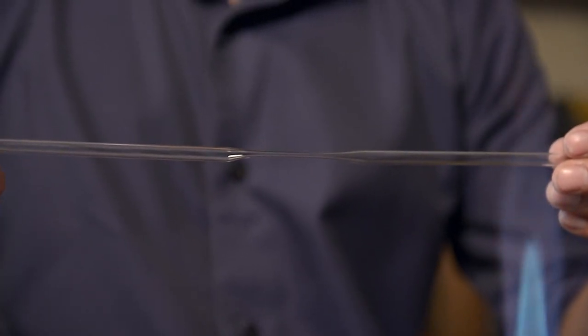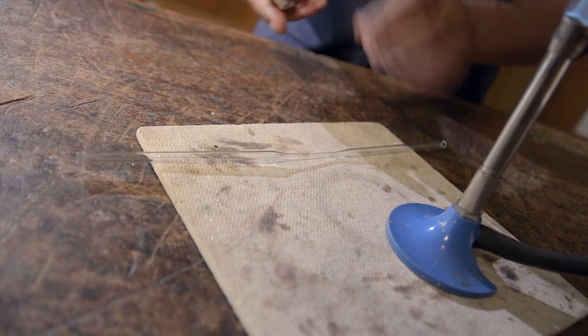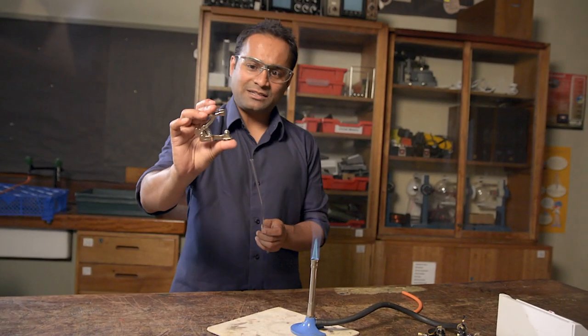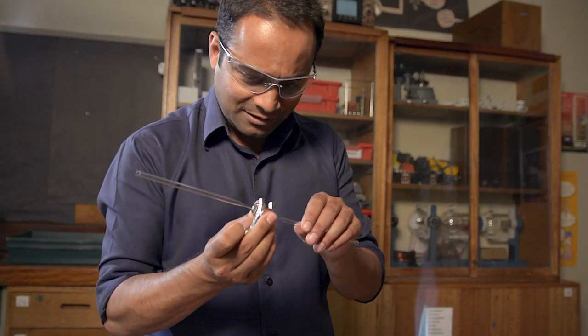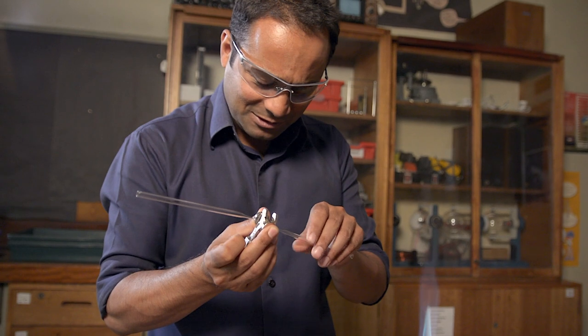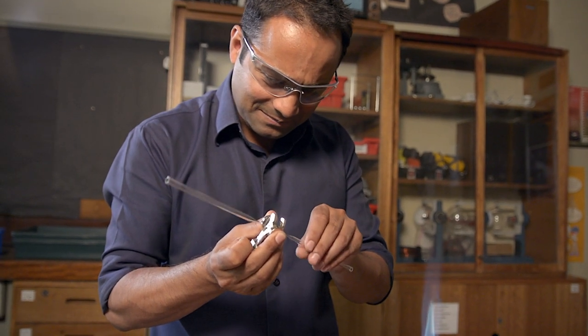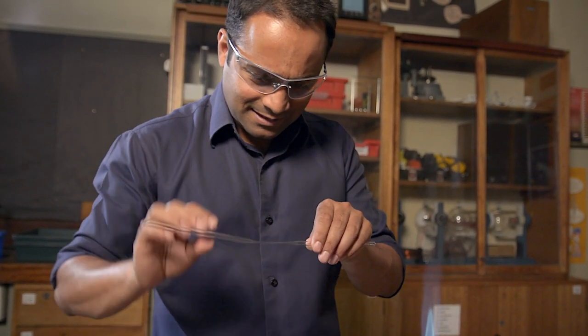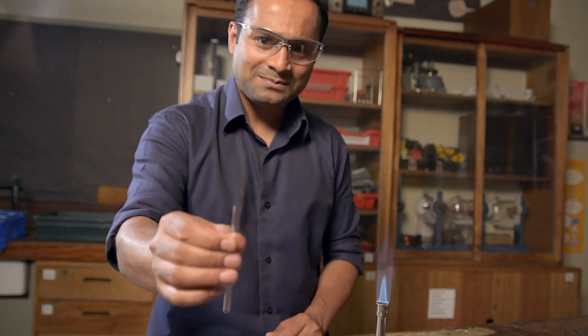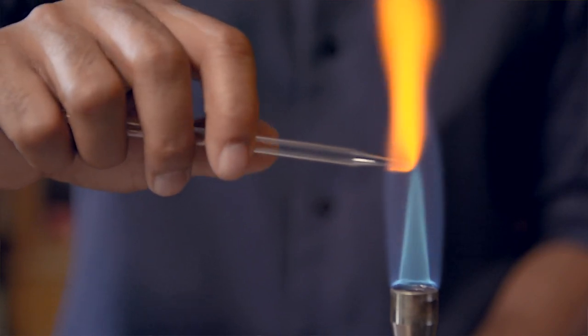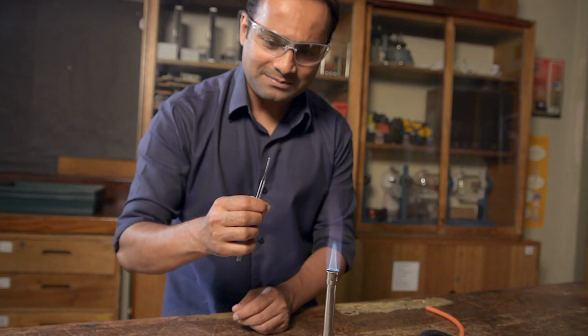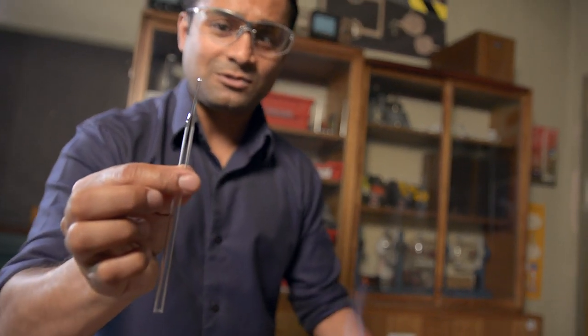You can see that I've got a much thinner tube there now. Once it's cooled down, you take a glass scoring device and just go around the thin end of the tube. That should snap cleanly off like that. Then just put this end back in the flame briefly to round off the edges, and you've got your nozzle ready to go.